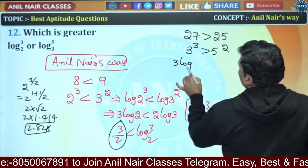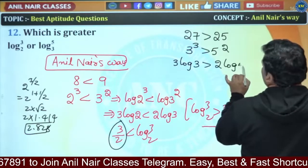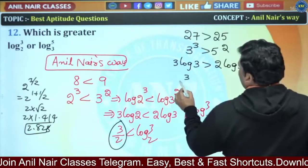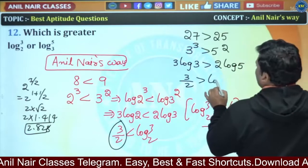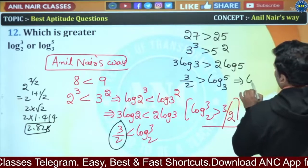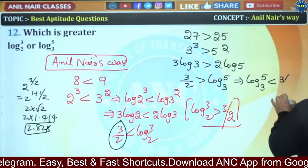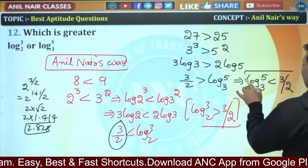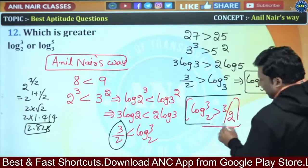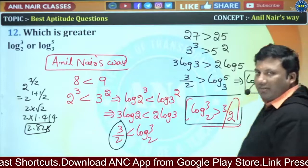So 3 log 3 is greater than 2 log 5, since log 5 squared is 2 log 5. Therefore, log 5 base 3 is less than 3 by 2. The second value, log 5 base 3, is less than 3 by 2, while the first value, log 3 base 2, is greater than 3 by 2.